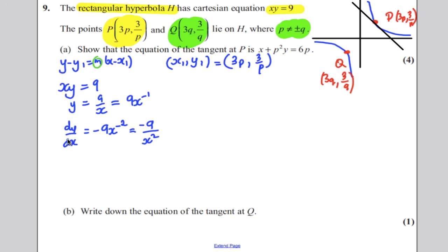Now, that is the gradient at any point on the curve. We want it particularly at the point P, which is x is 3p, y is 3/p. So we're going to work out dy/dx. We've got dy/dx in terms of x, so we're going to substitute in the x value 3p,